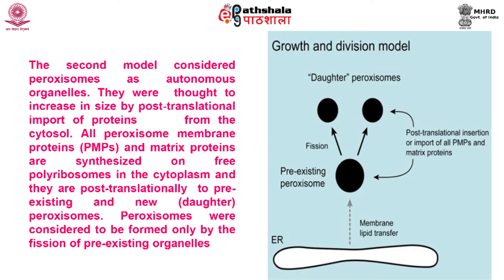The second model is the growth and division model. This model considered peroxisomes as fully autonomous organelles like chloroplasts and mitochondria. They were assumed to increase in size by post-translational import of protein constituents from the cytosol. Peroxisomes were considered to be formed only by the fission of pre-existing organelles, and the ER served only as a source of membrane lipids required for the enlargement of pre-existing peroxisomes.